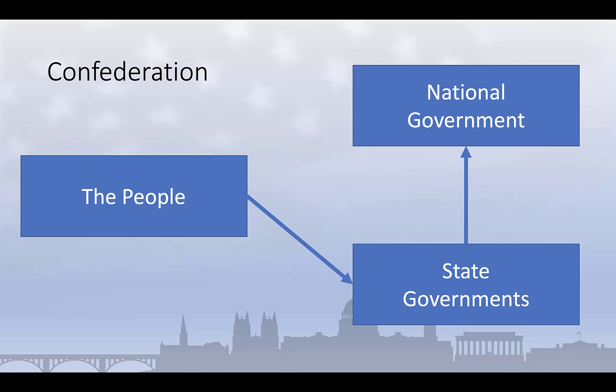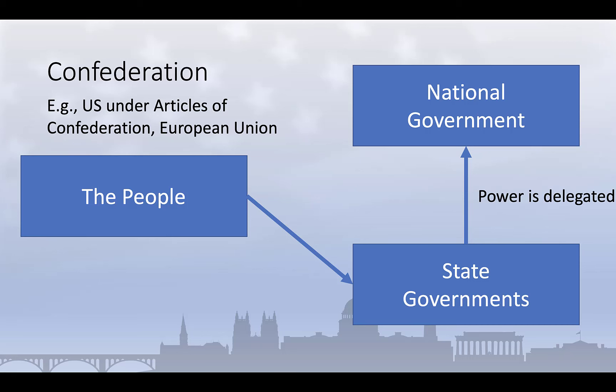There have also been examples of confederal systems where the national government exercises only those powers explicitly granted to it by the subnational or state governments. Historically, the United States under the Articles of Confederation, prior to the adoption of the US Constitution in 1789, operated in this way. The power of the national government was extremely limited, and most political authority rested with the states. A case can be made that the European Union operates in a similar way, or under a confederation, today. In such political systems, political authority is highly decentralized.